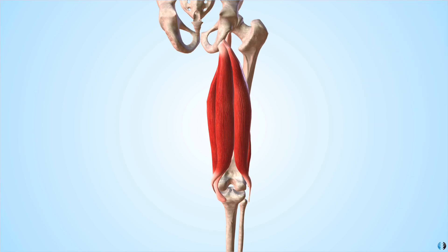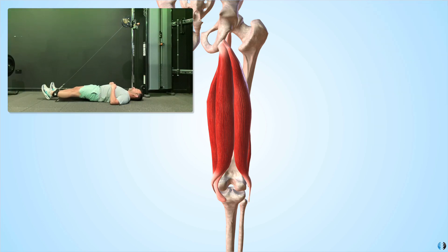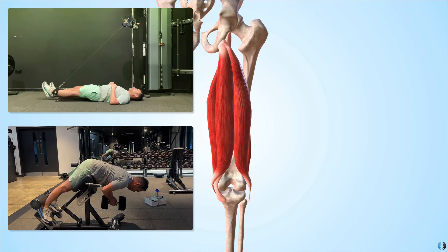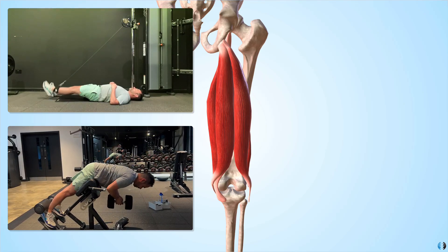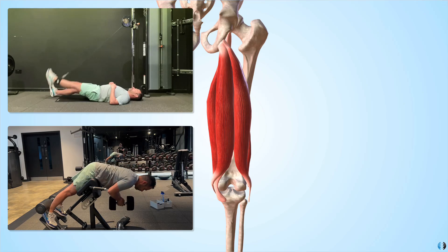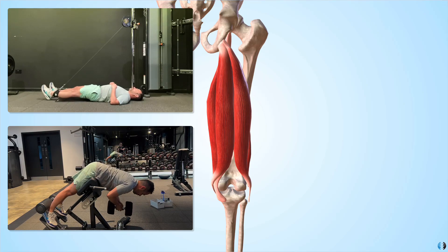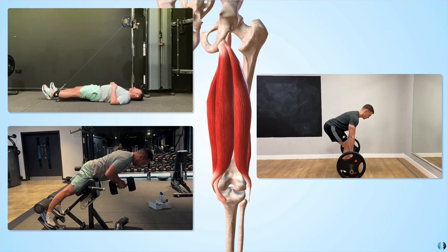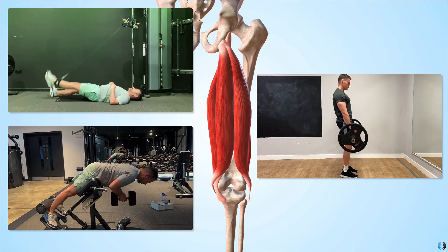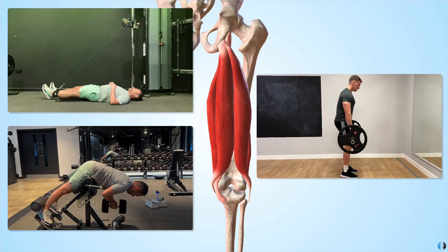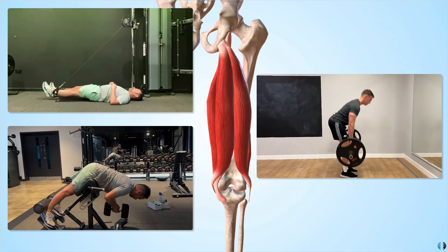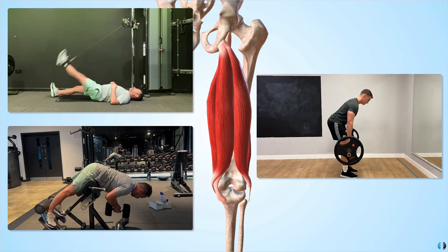What might we do for proximal hamstring rehabilitation? We might consider a hip extension on a cable, or a glute-ham developer exercise lifting a weight, which really works the hip extension component. And of course, the classic Romanian deadlift or eccentric deadlift, which focuses on the hip extension proximal hamstring component. It's super important to incorporate these alongside knee flexion-based exercises in your practice.